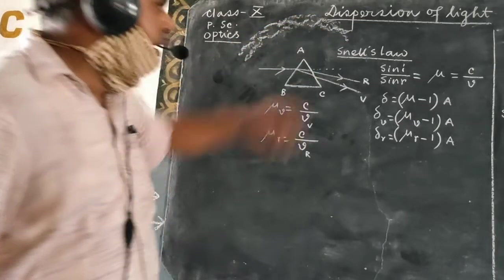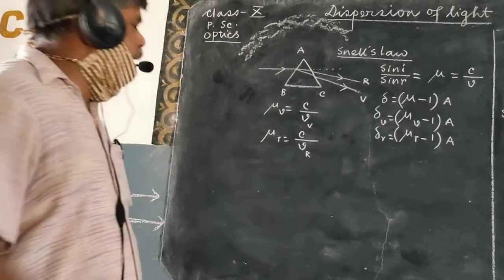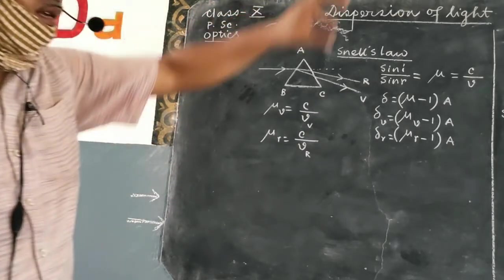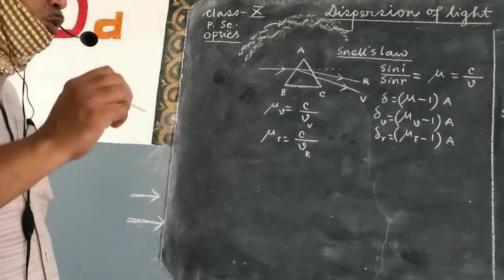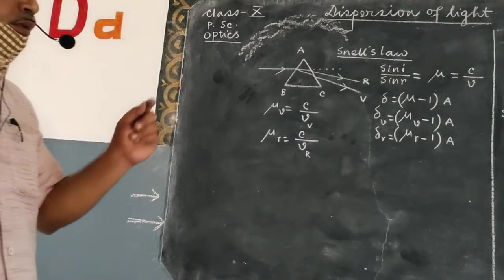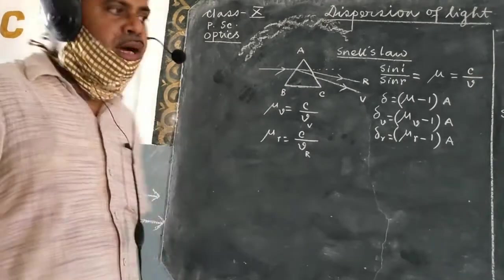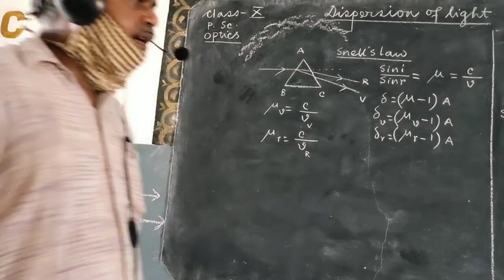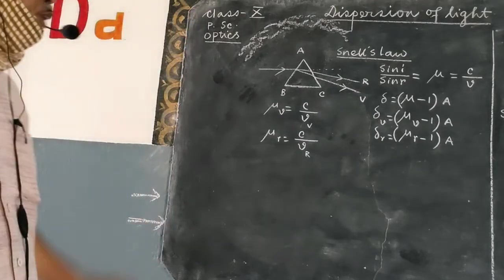In the formation of the rainbow, what happens? Sunlight, that is white, falls on water droplets floating in the atmosphere. Those water droplets are acting as a refractive medium here. And when white light falls on them, due to its passage through the water droplets, it gets split into constituent colors. That is, we shall see seven colors are there, and therefore we can see the rainbow.